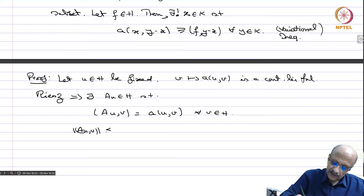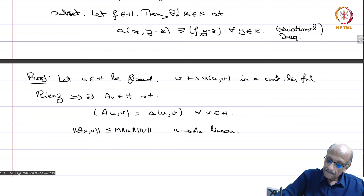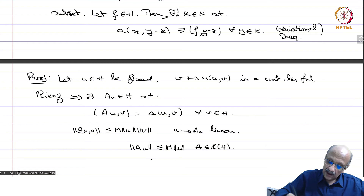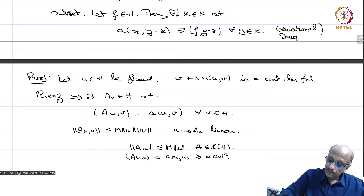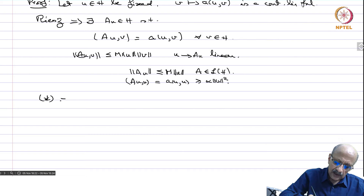|A(u,v)| is less than or equal to M times norm(u) times norm(v), and therefore u going to Au is linear and norm(Au) is less than or equal to M times norm(u). So A belongs to L(H), and we have A(u,u) equals ⟨Au, u⟩ greater than or equal to alpha times norm(u) squared. Let us call the variational inequality as star — that is the problem we have to solve.